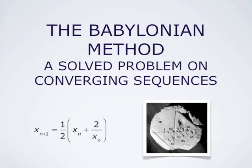The Babylonian method — a solved problem on converging sequences. In this video, we consider the sequence determined by the recursive rule x_{n+1} = ½(x_n + 2/x_n). It turns out that this sequence converges, assuming that x_1 is chosen in a suitable way. This sequence was known already to the Babylonians, who used it around 1600 BC to compute numerical approximations of the square root of 2.